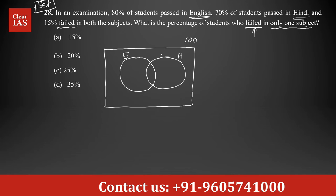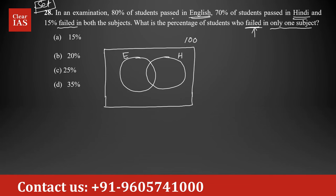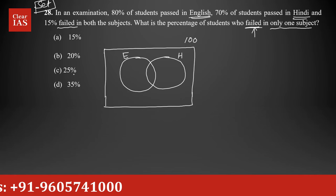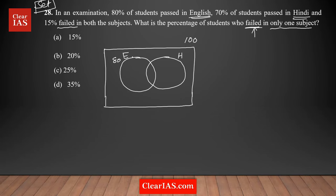I'm taking total students as 100. Out of that, how many students passed in English? 80% — so 80 of them passed in English. And 70% passed in Hindi, so 70 of them passed in Hindi. Definitely there are some common people here — the intersection part that represents students who passed in both English and Hindi.